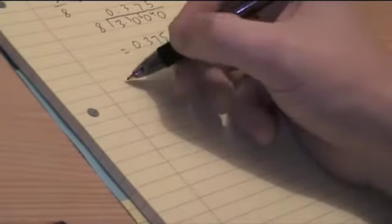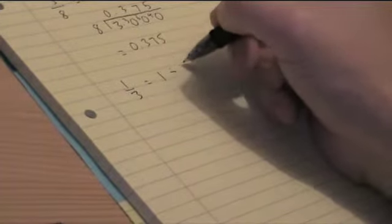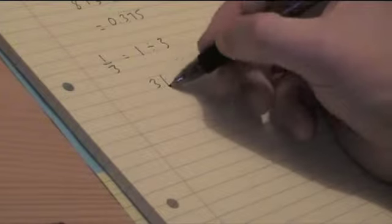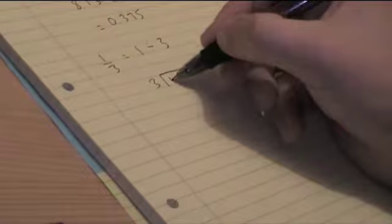OK, next we're going to look at how this works with recurring decimals. So we'll start off with a third. And that's equal to 1 divided by 3. So again, using this method, 3 on the outside, 1 on the inside.